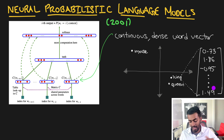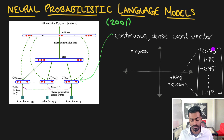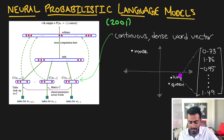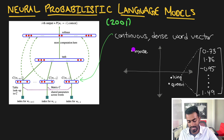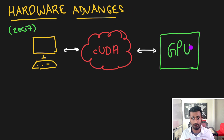On top of that, these word vectors if learned properly could encode meaning — which means that words that are similar to each other would be closer to each other. So in this case, king and queen could be represented by numbers that are closer to each other than they are to, let's say, mouse, which is very different in meaning.